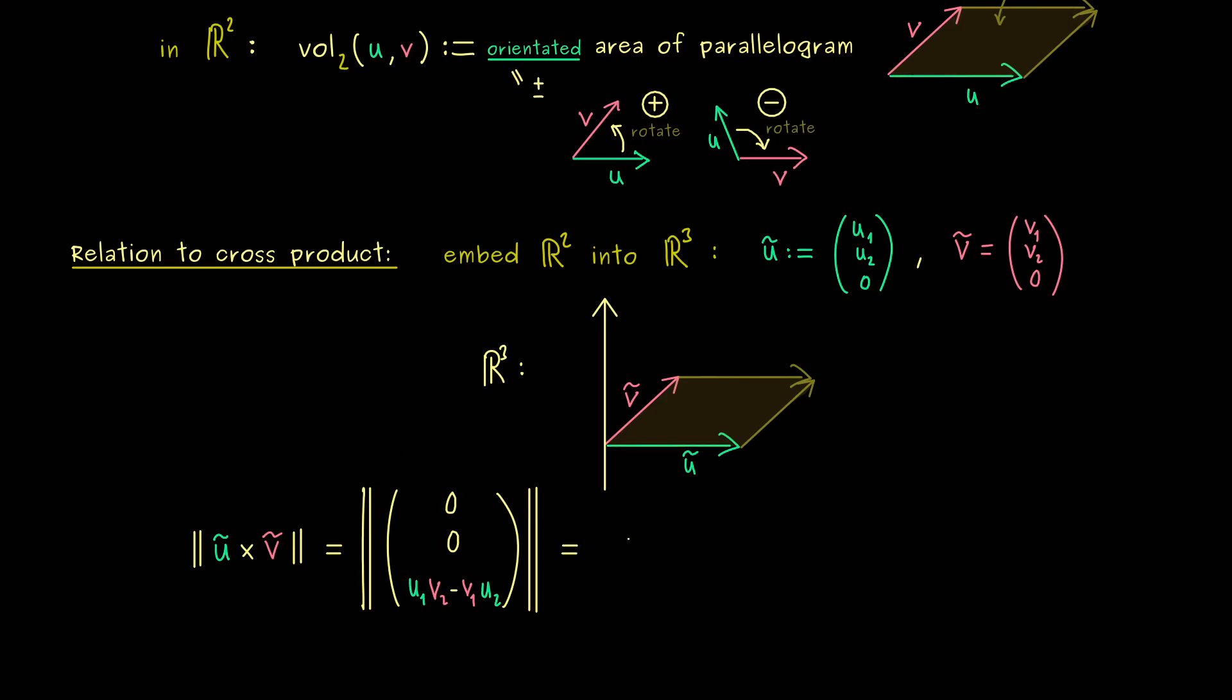And then you see the Euclidean norm here is not hard to calculate, it's just the absolute value of the last entry, simply because all the other ones are exactly 0. So there we have it, this is the result: the area of the parallelogram is given by this number.